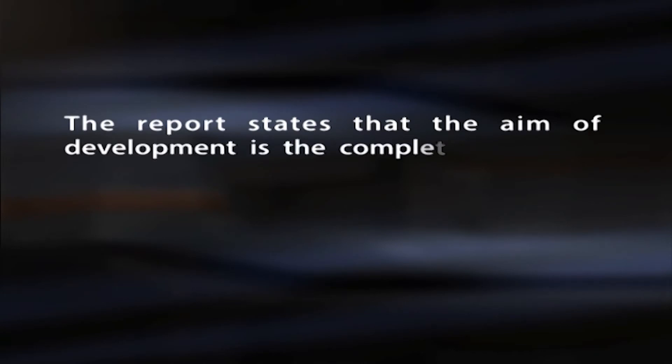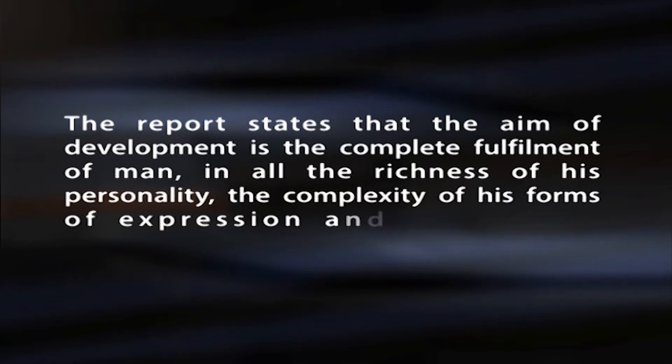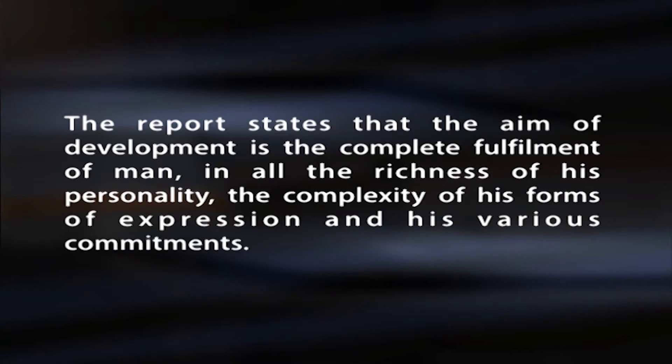All people should receive in their childhood and youth an education that equips them to develop their own independent, critical way of thinking and judgment. The report states that the aim of development is the complete fulfillment of man in all the richness of his personality, the complexity of his forms of expression and his various commitments. This human development, which begins at birth and continues all through a person's life, is a dialectic process based on both self-knowledge and relationships with other people, and it also pre-supposes successful personal experience.